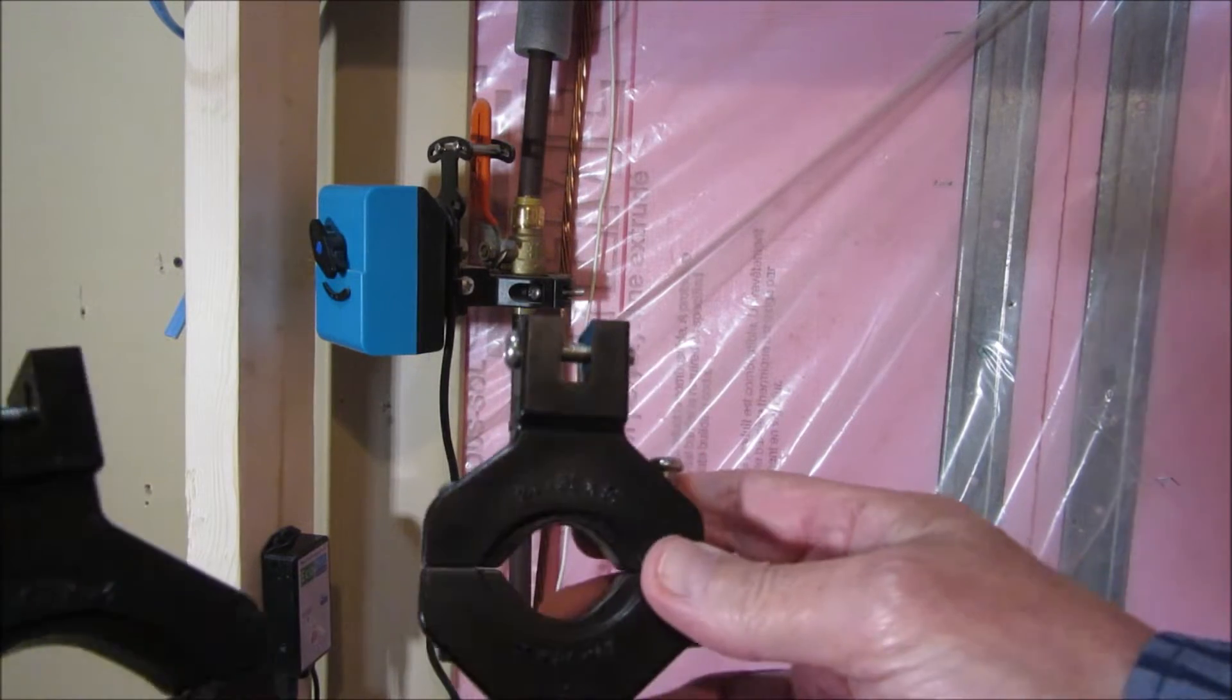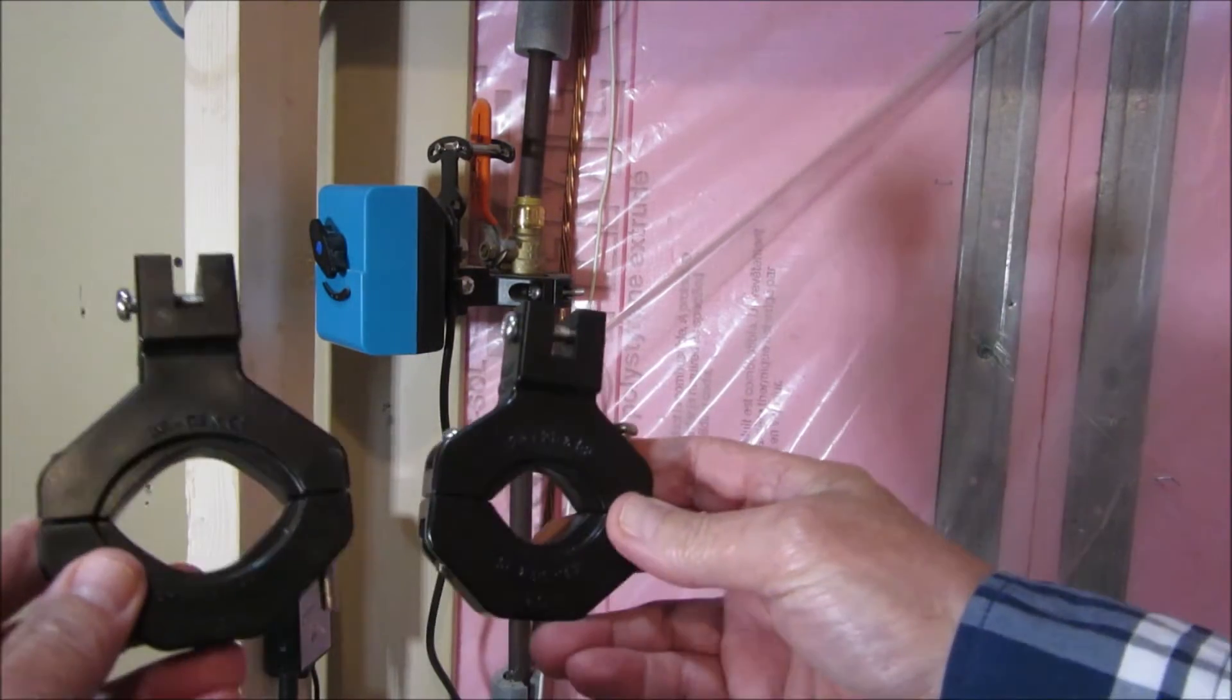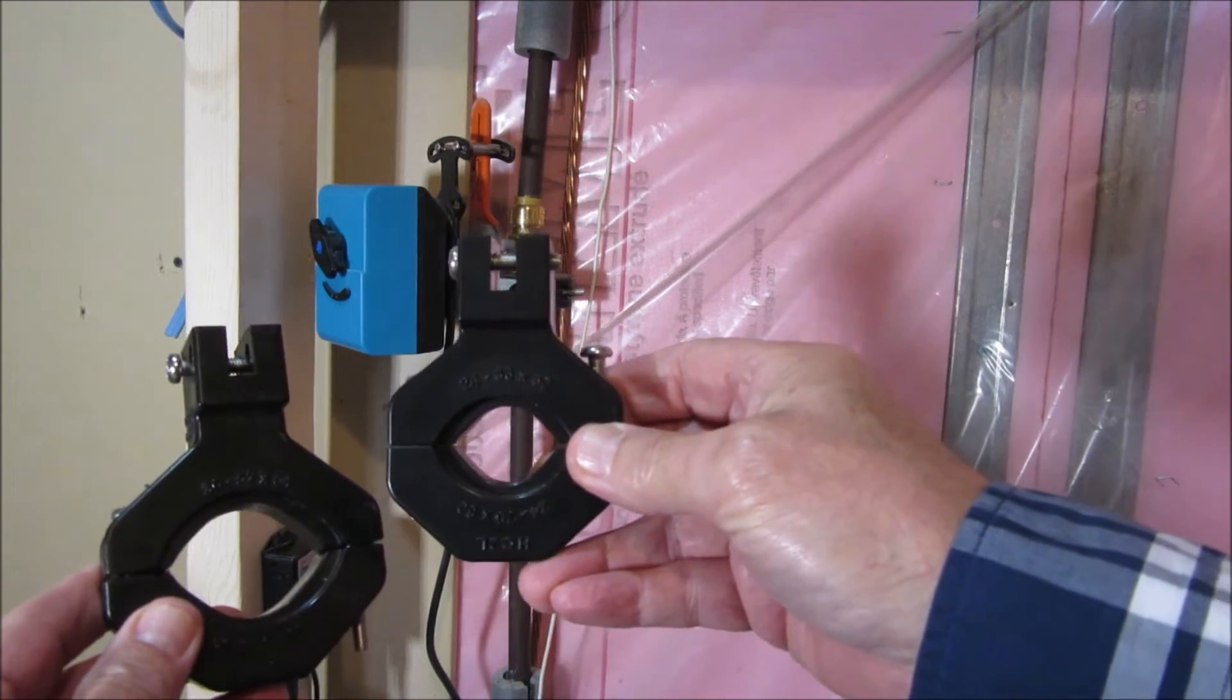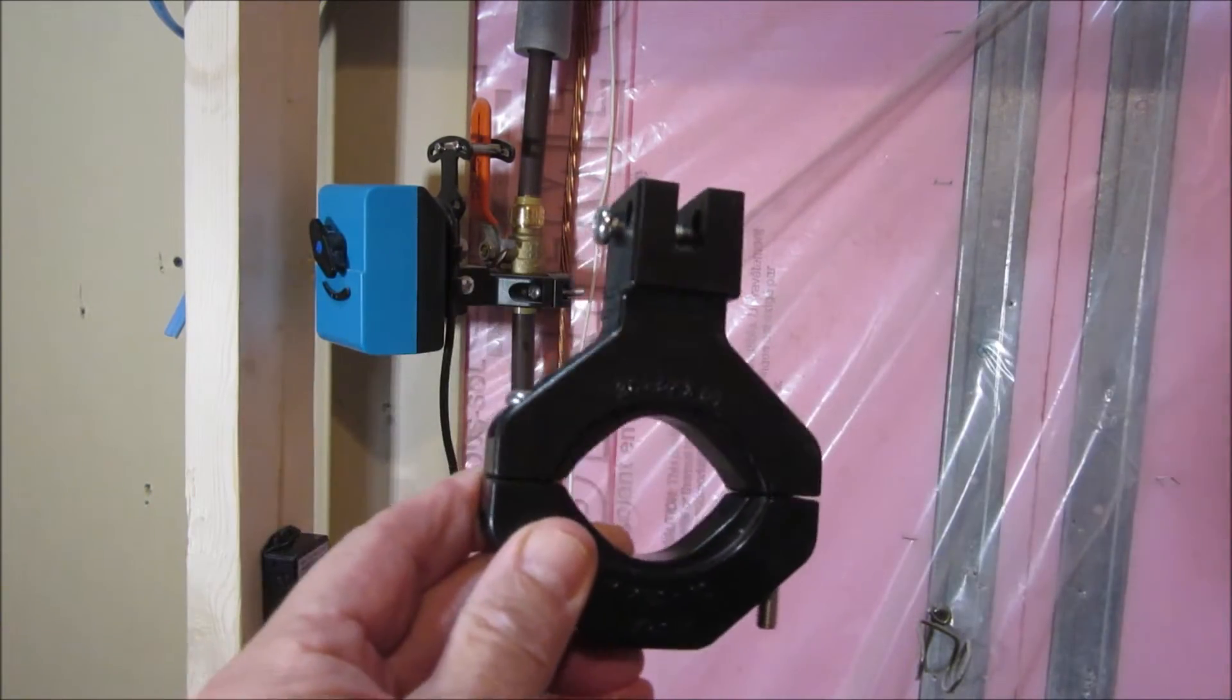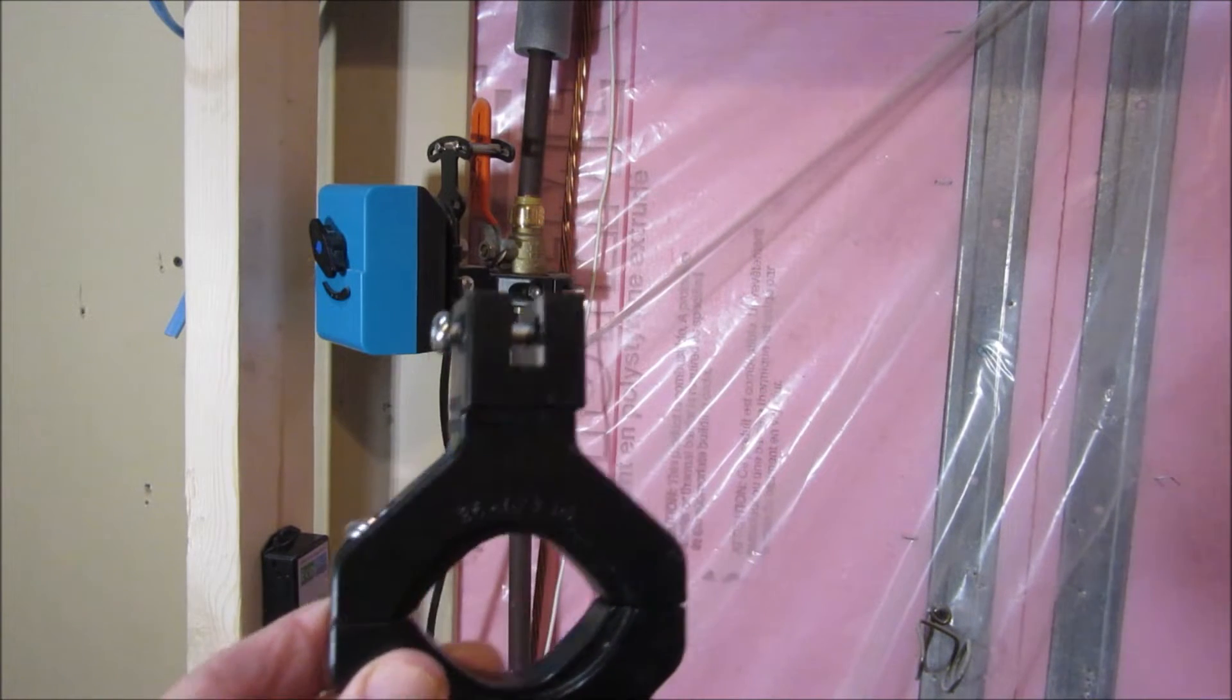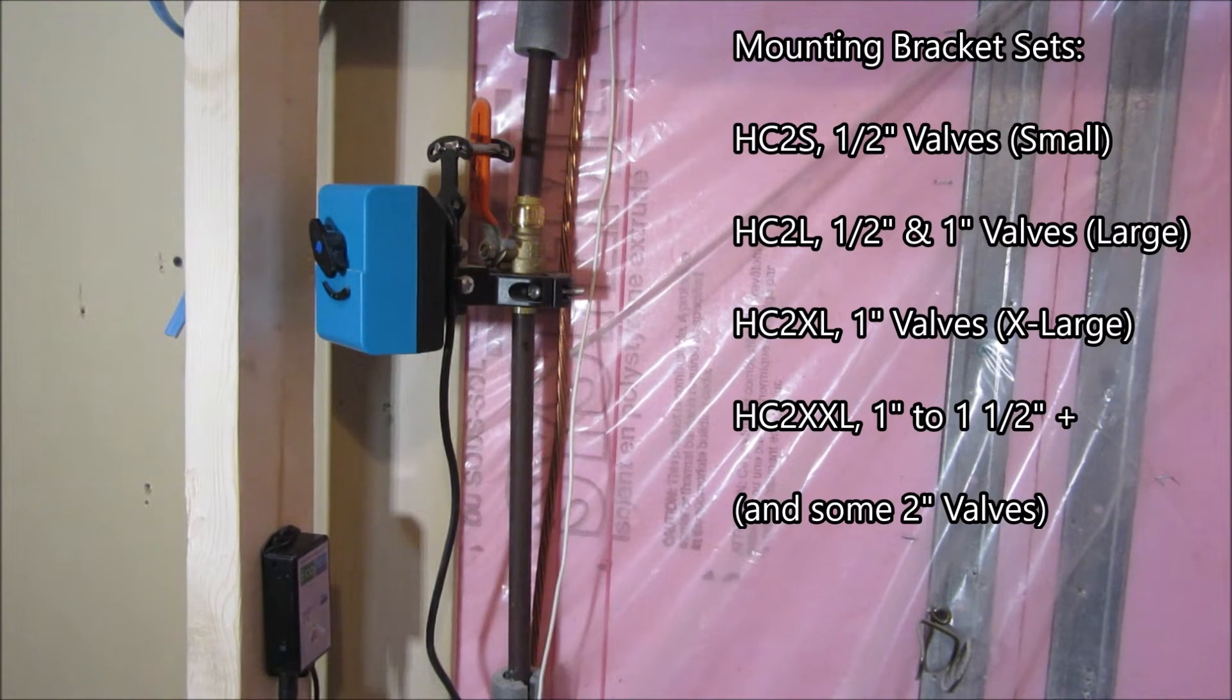The standard mounting kit comes with two brackets. This is the large, or the HC2L, and this is the extra-large, or the HC2XL. And we also have a HC2XXL for very large valves and an HC2S for smaller valves.